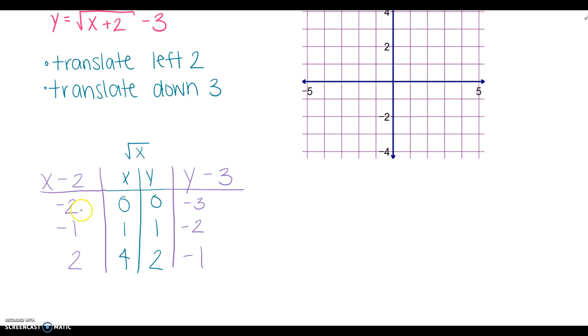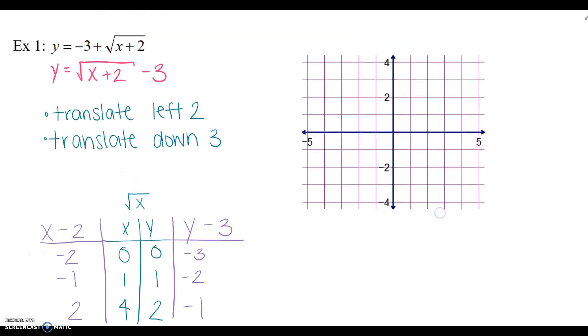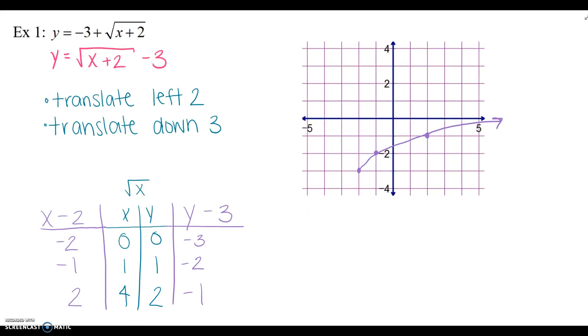Okay. Now, these are the points that I'm going to graph. Negative 2, negative 3. Negative 1, negative 2. And 2, negative 1. And then make your curve. Which is hard to do on this surface. Yours should probably look a little curvier than mine.